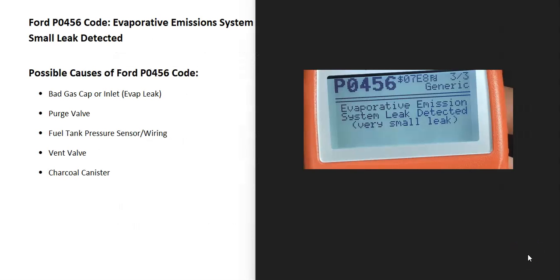Today I talk about a Ford with a P0456 code, what it is and how you go about fixing it. A Ford P0456 code is an evaporative emissions system small leak detected.